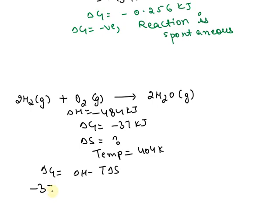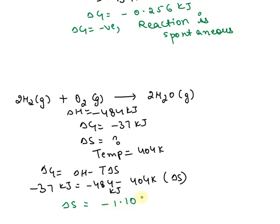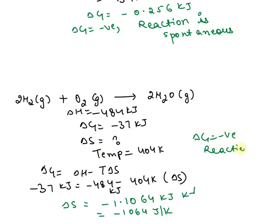Substituting the values: delta G is minus 37 kilojoule equals delta H minus 484 kilojoule, minus 404 kelvin into delta S. Solving this, the delta S value comes to be minus 1.1064 kilojoule per kelvin. In this reaction the delta G is negative, so the reaction is spontaneous.